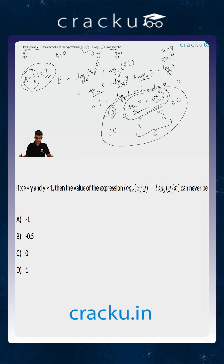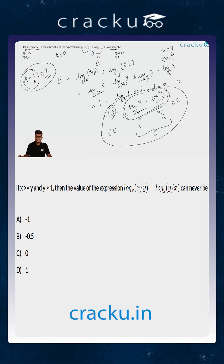So looking at the options, this expression can definitely equal minus 1 — so that is not the answer. It can definitely equal minus 0.5 — so that is also not the answer. It can equal 0 when x equals y, but it will never be a positive number. So the correct answer is option D.